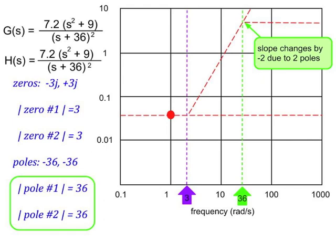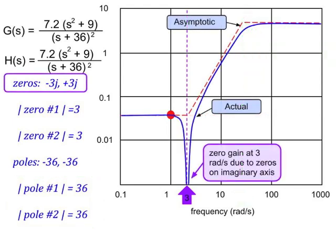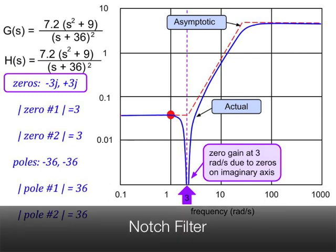We have now completed the asymptotic frequency response plot. We'll sketch in the actual curve, shown here in blue. The thing you'll note is that in the actual curve, we have zero gain at a frequency of 3 radians per second. This is due to the two zeros on the imaginary axis. Any transfer function with this kind of behavior is known as a notch filter.